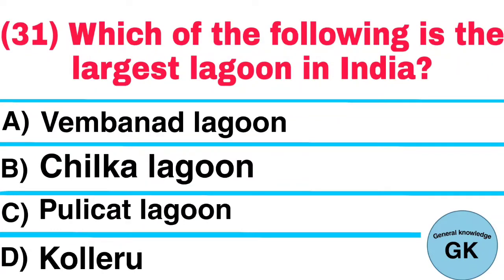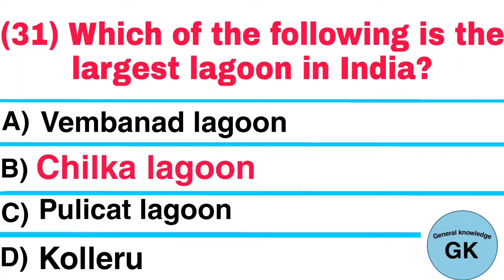Question number 31. Which of the following is the largest lagoon in India? A. Vembanad Lagoon, B. Chilka Lagoon, C. Pulikat Lagoon, D. Koleru. Answer: Chilka Lagoon.